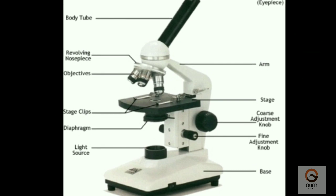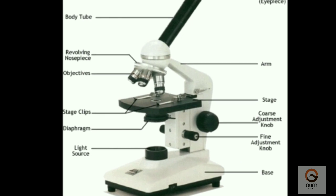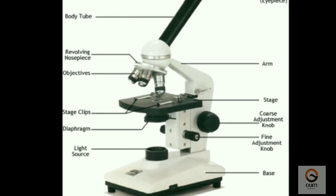First one is the eyepiece. The part of the microscope that is closest to your eye, to which you look. It contains the ocular lens which makes the image produced by the objective lenses larger.